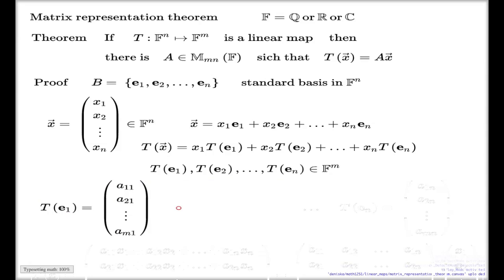And here's my components for T(e_2). You see the first index varies across the components, but the second index is linked to the e_2 vector here. Other vectors have similar structured components. The last one, e_n, here they are.